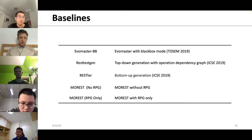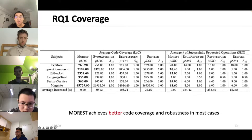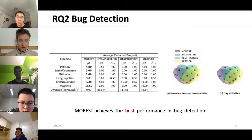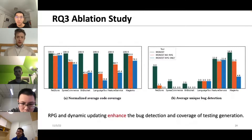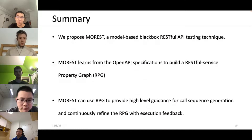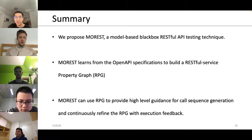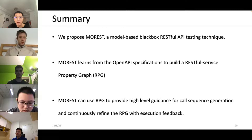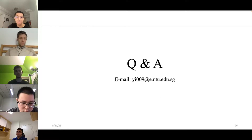We evaluate Morist on code coverage, bug detection, RPG guidance, and dynamic RPG updating. Benchmarks contain several services from previous work, with three state-of-the-art black-box RESTful testing baselines: EvoMaster, RestTestGen, and bBOXRT. Morist achieves better code coverage and robustness in most cases, and achieves the best bug detection performance. RPG dynamic updating enhances both bug detection and test case generation. We proposed Morist as a model-based black-box RESTful API testing technique that uses OpenAPI specifications to build a visible property graph, guiding test sequence generation and refining with execution feedback. Thank you.